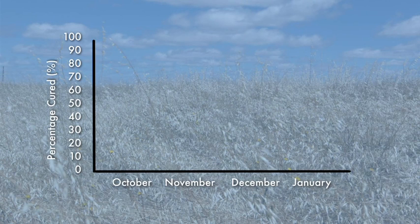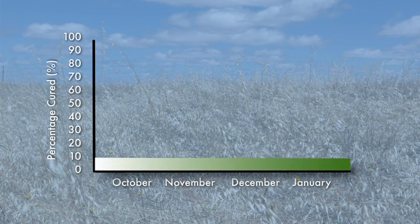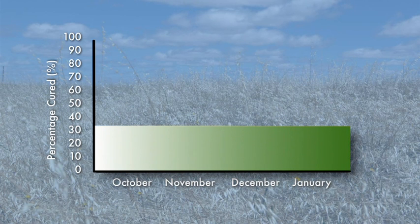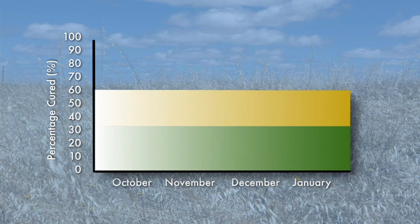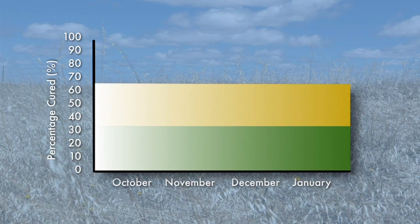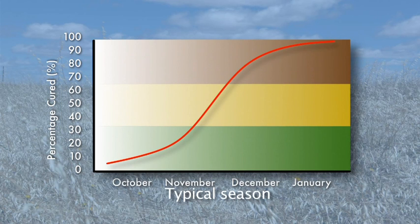This graph shows the three basic stages of grassland curing in the field. From 0 to 30 percent cured the grass is basically green — we call this the green phase. From 40 to 60 percent cured the grass is mostly yellow — we call this the yellow phase. And from 70 to 100 percent cured the grass is yellow and very dry — we call this the dry phase.